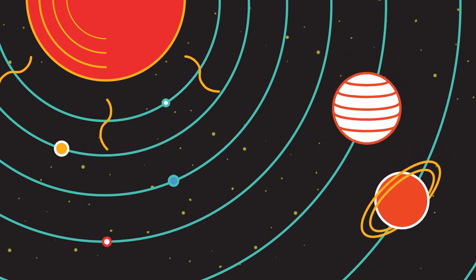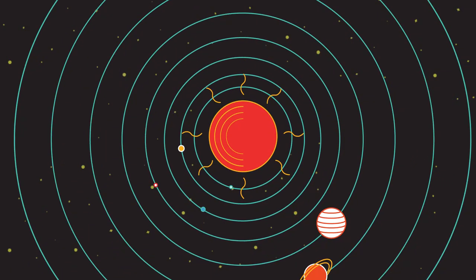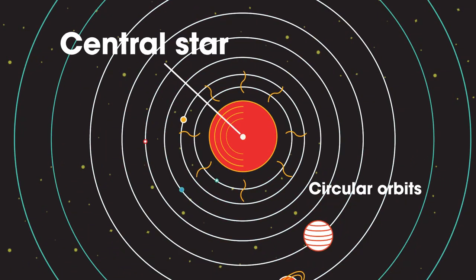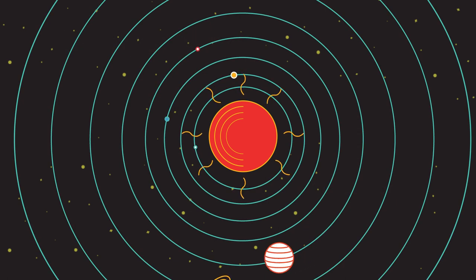So what does speed and velocity have to do with planets? Most planets have nearly circular orbits around a star. So the planet's speed will remain constant. But because the direction changes, so does the velocity.